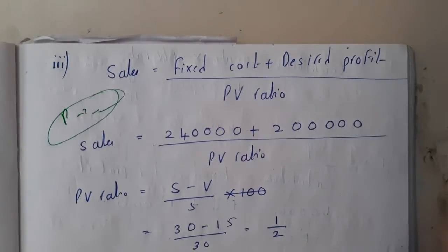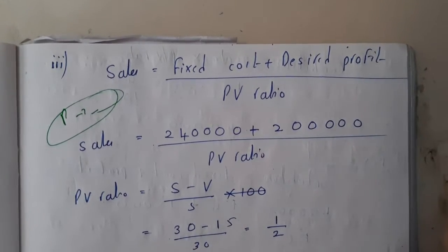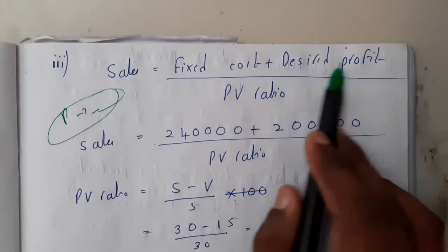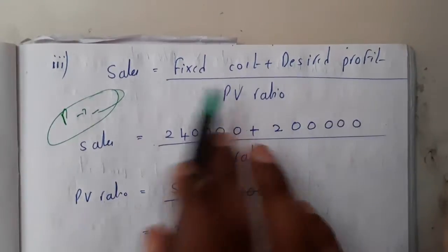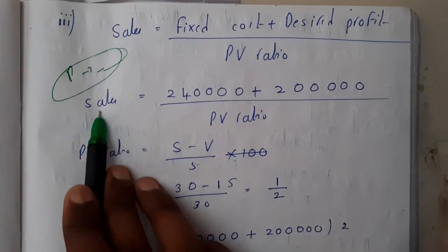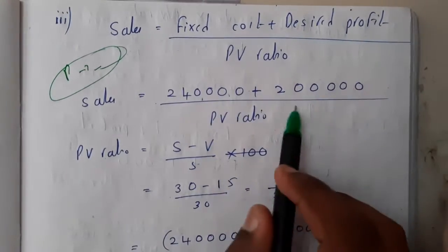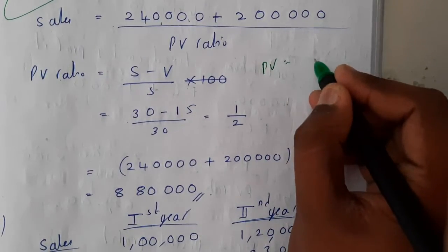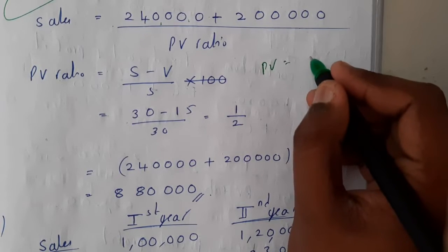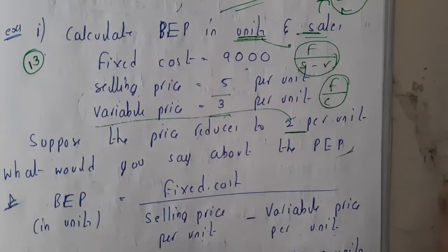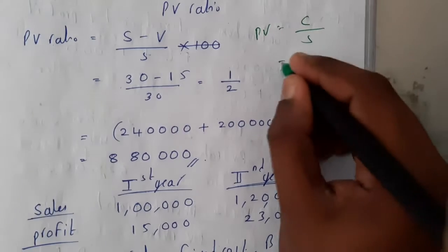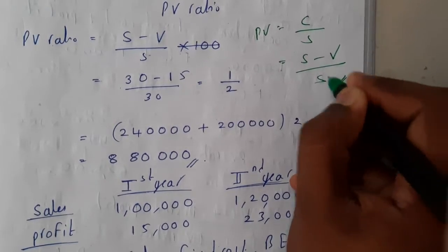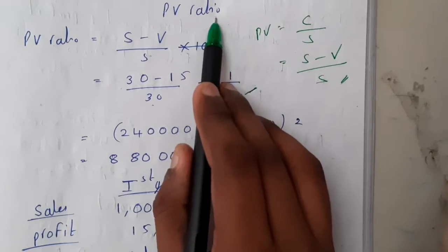To find sales required for a desired profit of 2 lakhs, the formula is: Sales = (fixed cost plus desired profit) divided by PV ratio. Fixed cost is 2,40,000 and desired profit is 2,00,000. We need the PV ratio, which is contribution divided by sales = (selling price minus variable cost) divided by selling price = (30 minus 15) divided by 30 = 1/2.